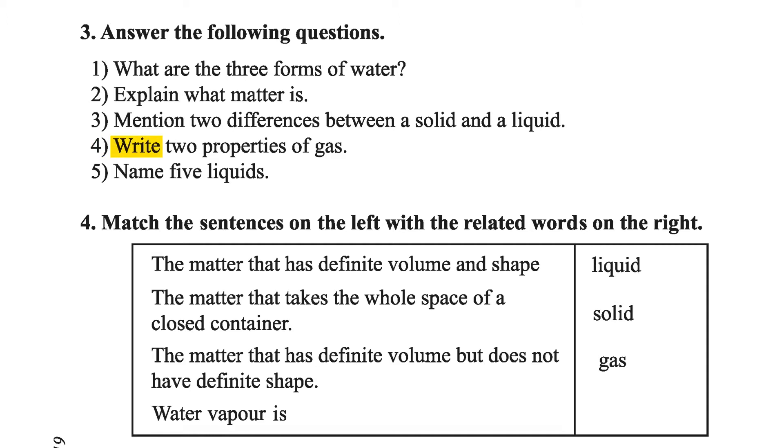Number 4: Write two properties of gas. The first property we have learned is: number one, gas fills up the whole space of a closed container — whole space means it is complete. Number two: Gas does not have a definite shape. These are the two properties of gas.